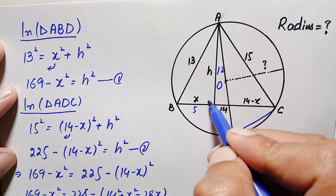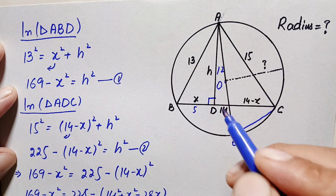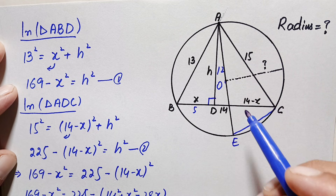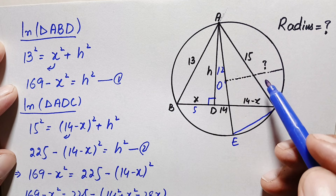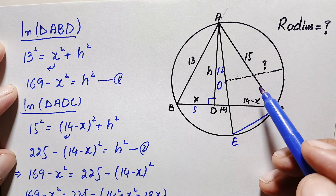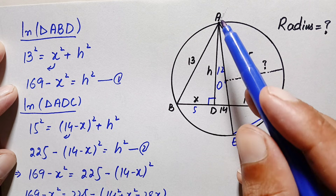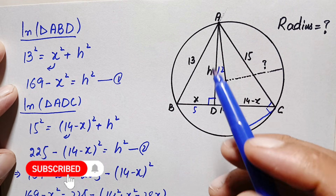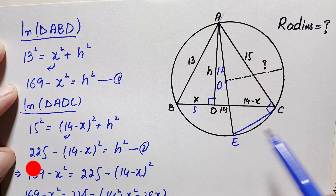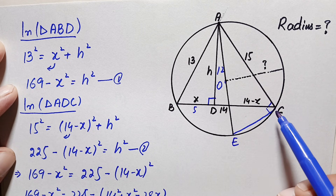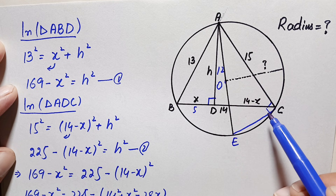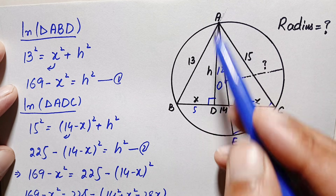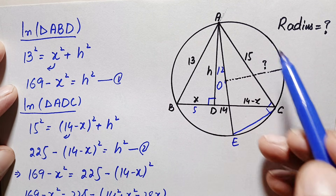Now look at triangle ABD — this is a right angle triangle where the angle at point D is 90 degrees. What about triangle AEC? By Thales' theorem, if there is any triangle inside the semicircle of a circle, then that triangle will be a right angle triangle. So by Thales' theorem, triangle AEC is a right angle triangle where the angle at point C is a right angle.